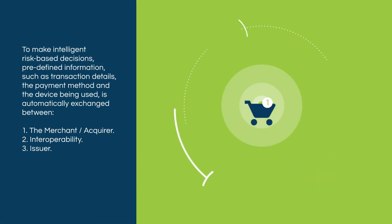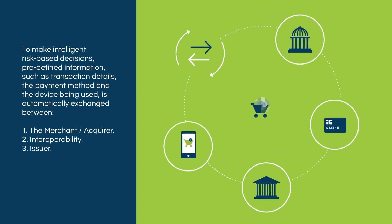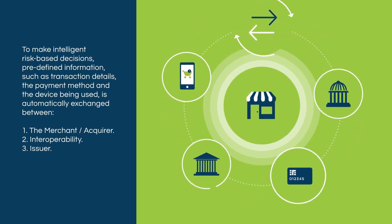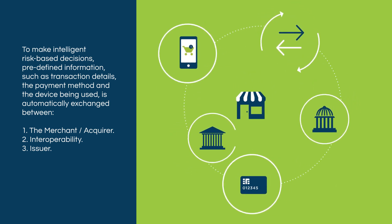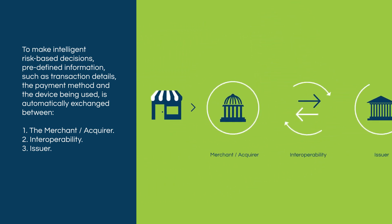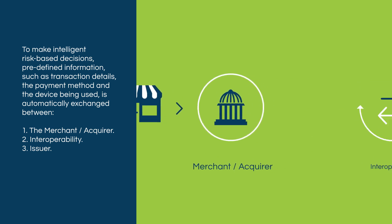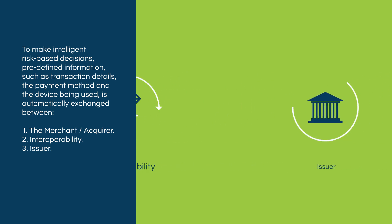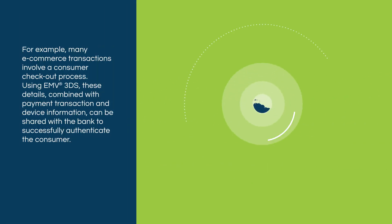To make intelligent risk-based decisions, predefined information — such as transaction details, the payment method, and the device being used — is automatically exchanged between: 1. The merchant or acquirer, 2. Interoperability, and 3. The issuer.